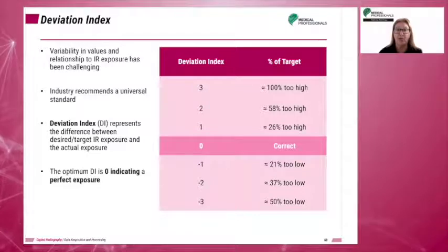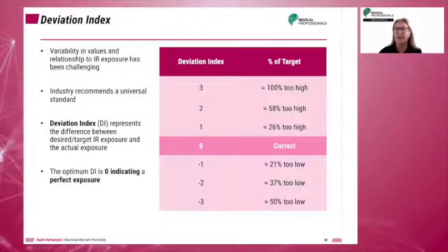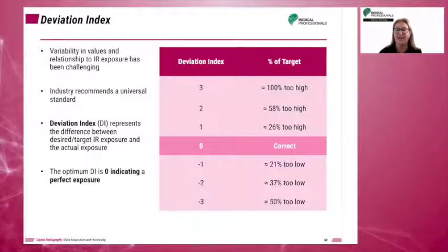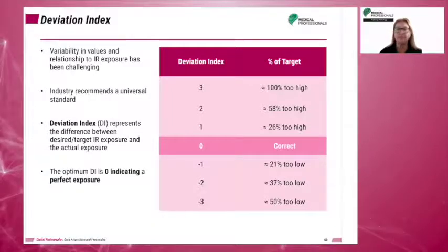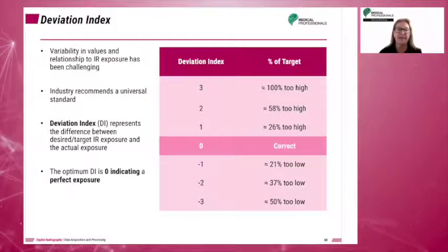The Deviation Index, or DI, represents the difference between the desired or target IR exposure and the actual exposure. DI is more helpful to the technologist in determining over or underexposure. The optimum deviation index is zero, indicating a perfect exposure. A DI value greater than zero indicates overexposure, and a DI value below zero indicates underexposure.